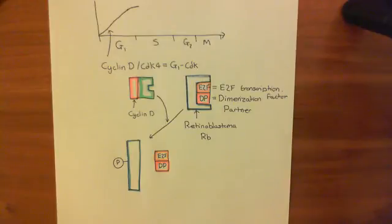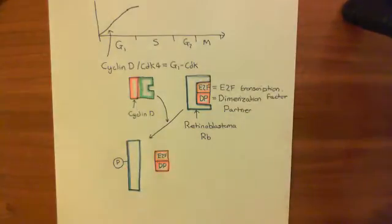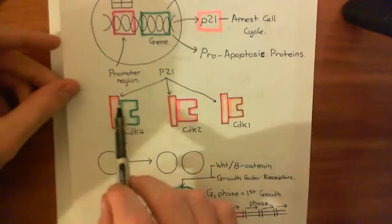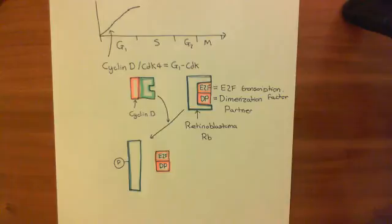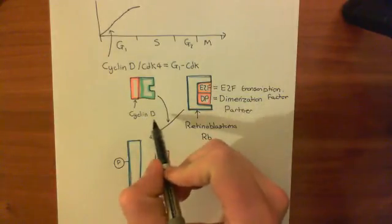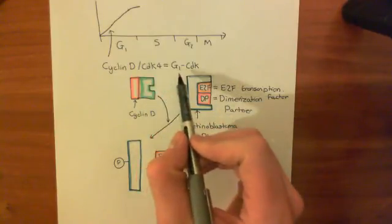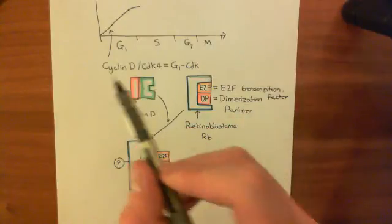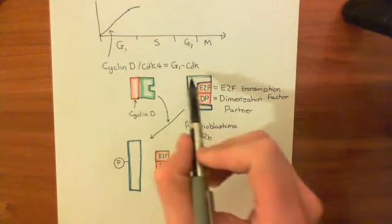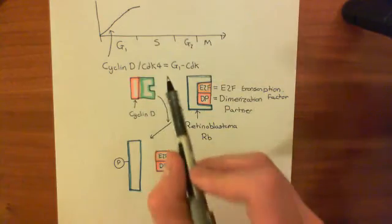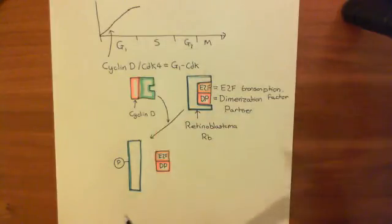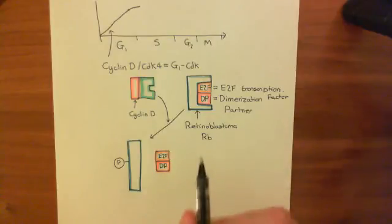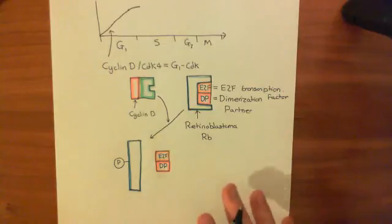The P21 protein, whose expression was increased by P53, binds to CDK4 and stops CDK4 from being able to bind to cyclin D. So you get fewer cyclin D CDK4 complexes. Once P53 is activated and leads to P21 being activated, the G1 CDK level within the cell plummets, making it impossible to move from G1 to S phase, blocking the cell from replicating its DNA.